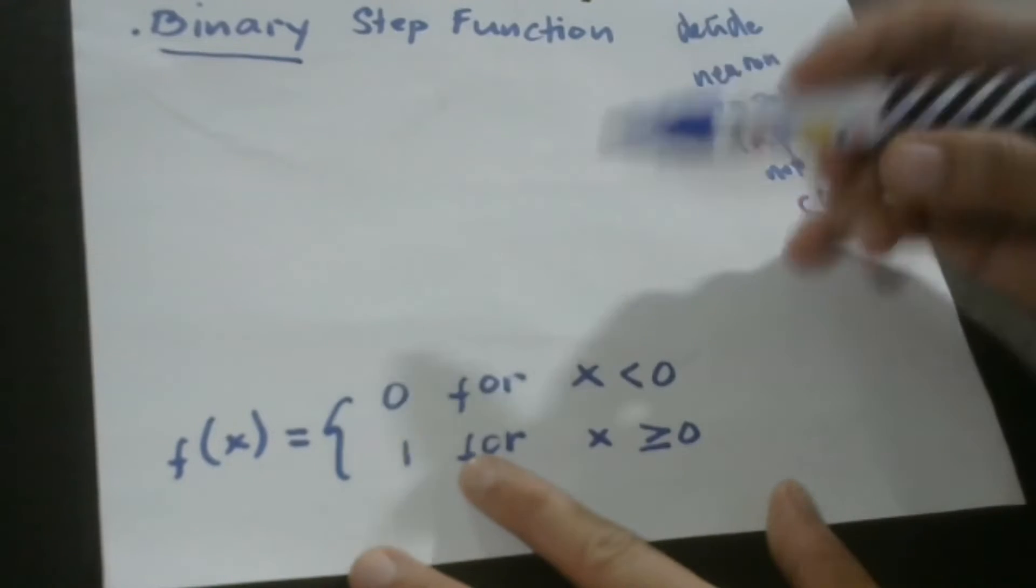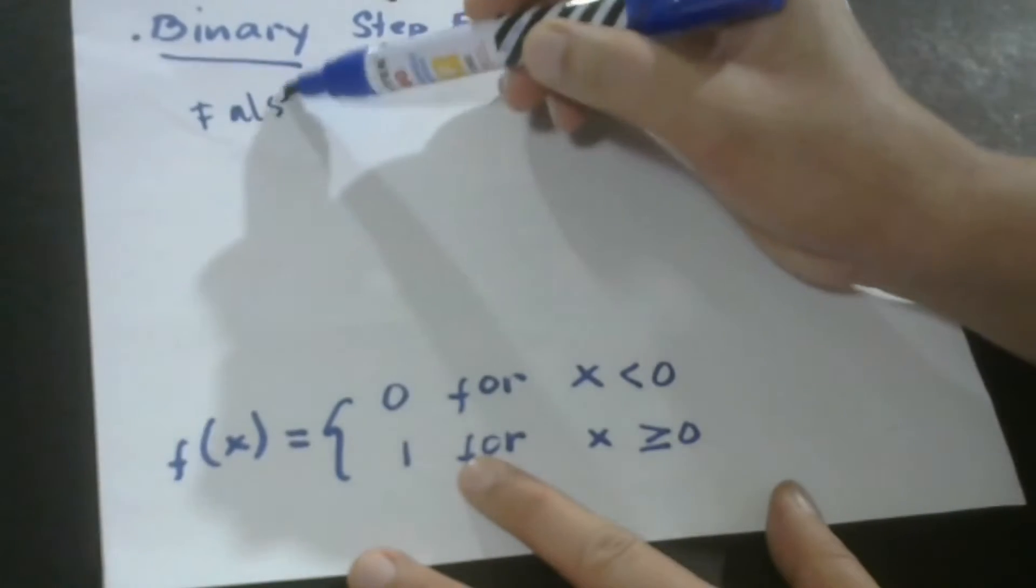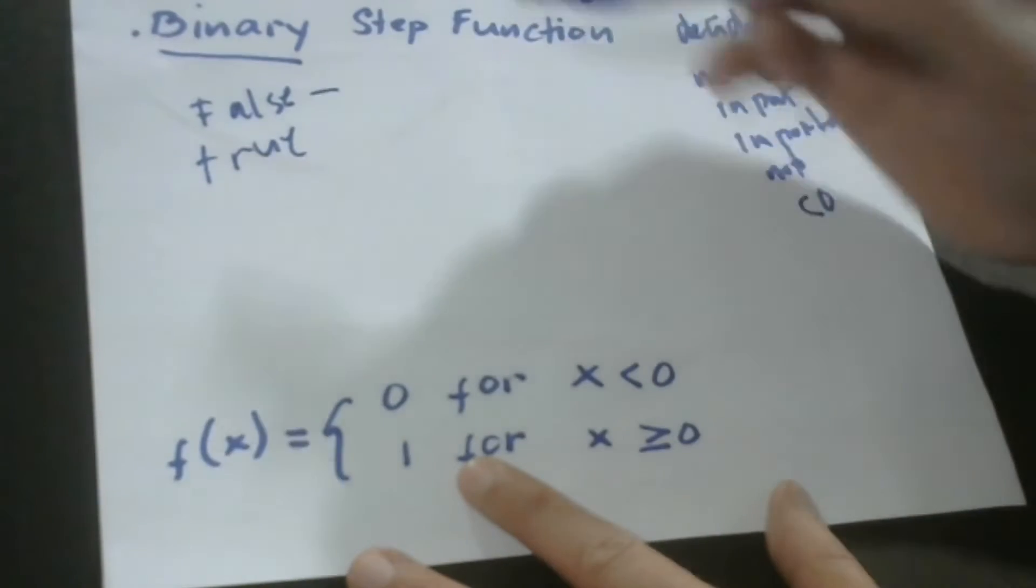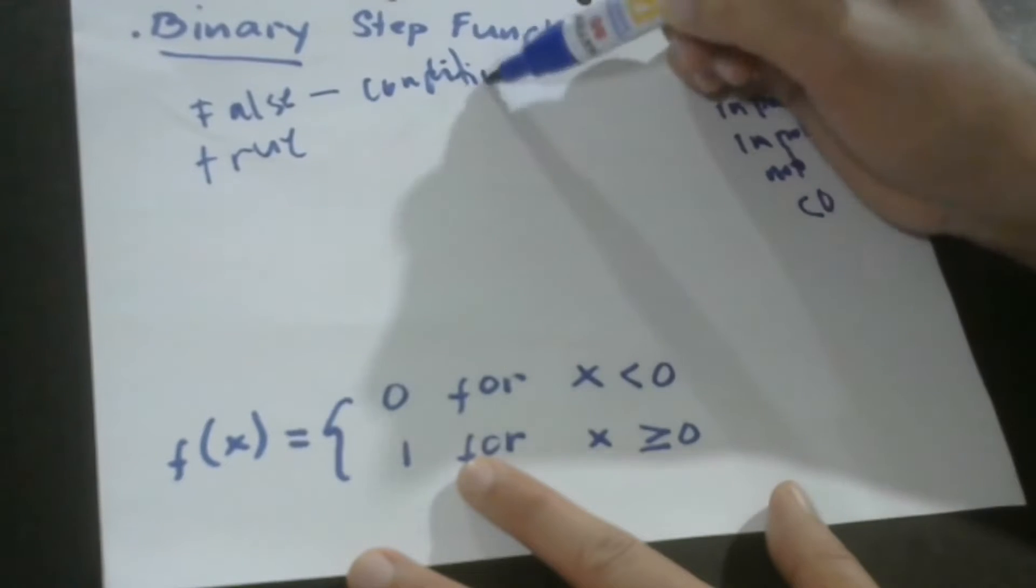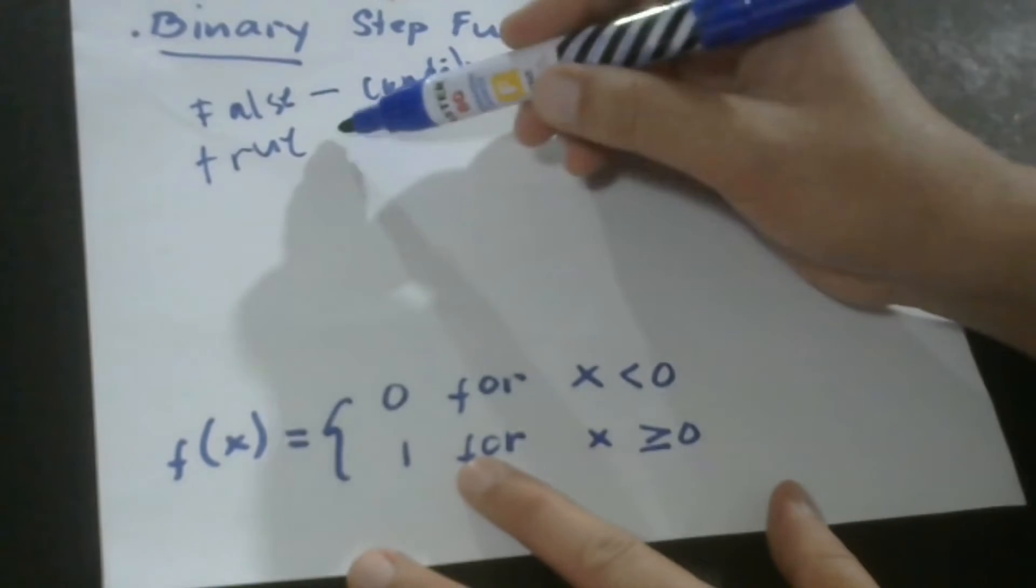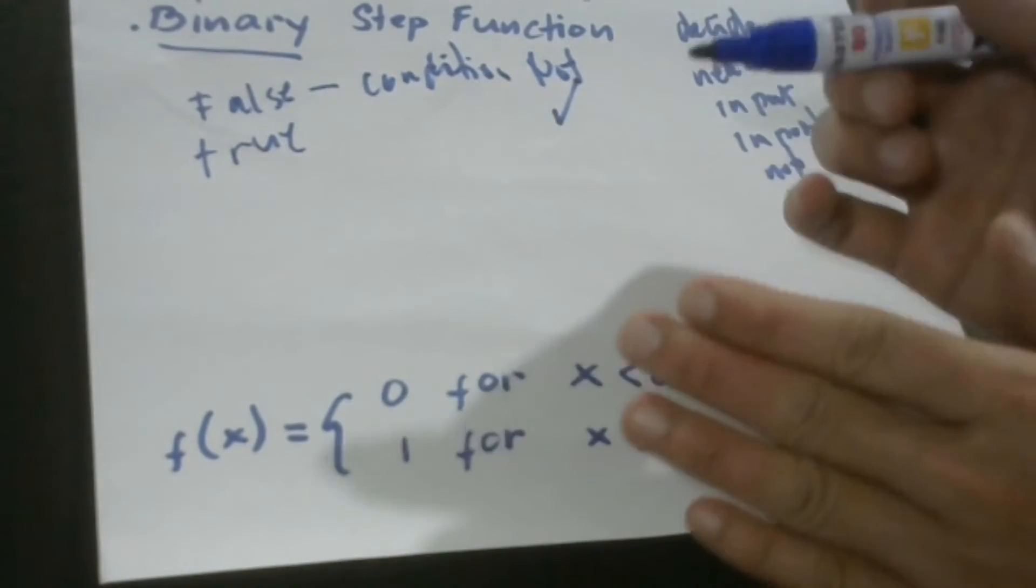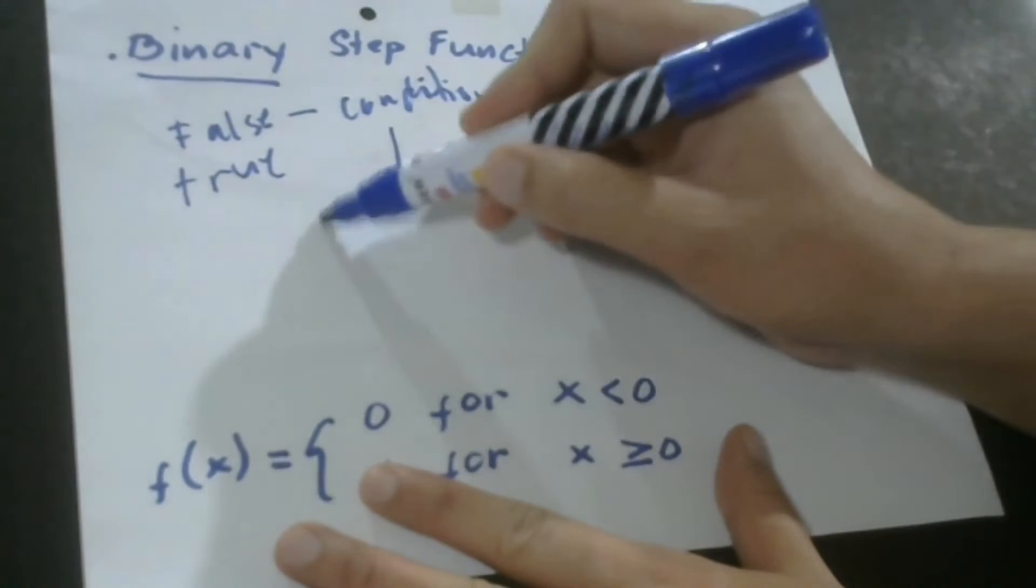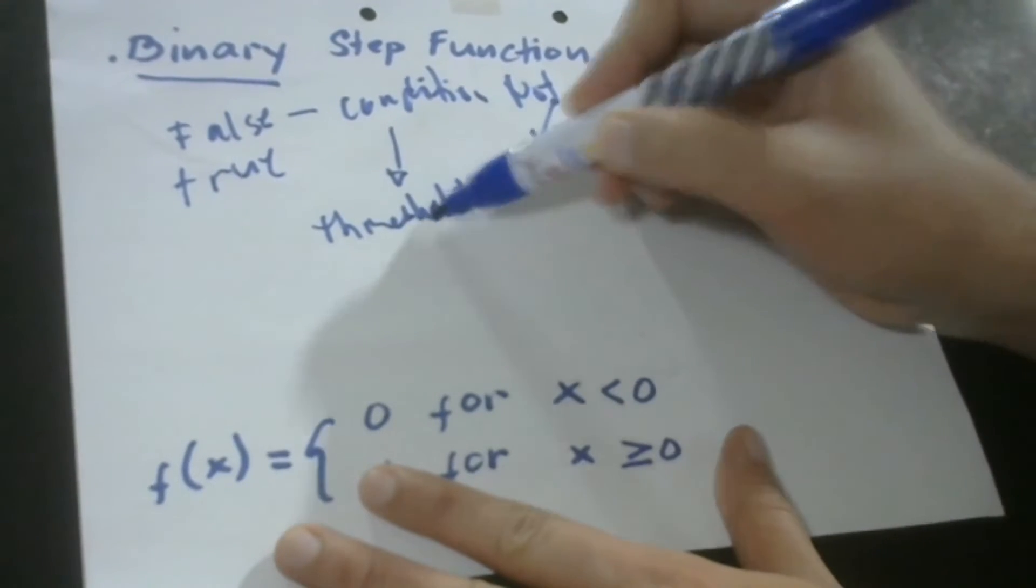Binary step function actually involves two things. It can be false or it can be true. It is false when a certain condition is not met, and it is true when a certain condition is met. So what is this condition all about? This condition has something to do with Threshold.